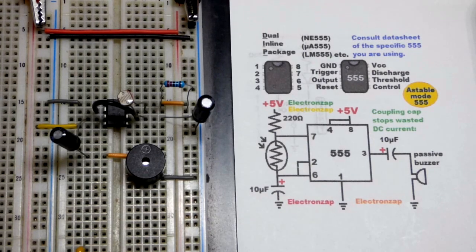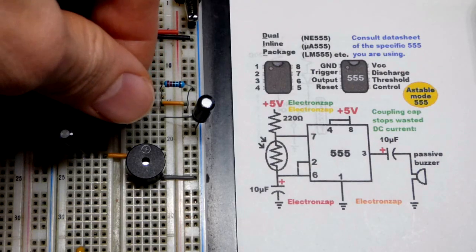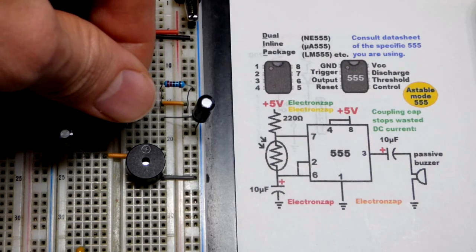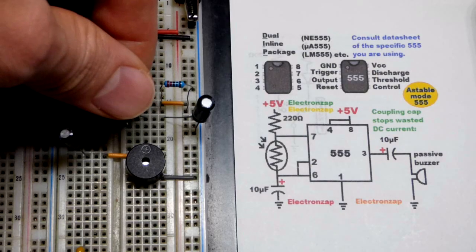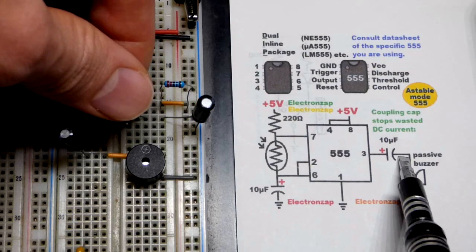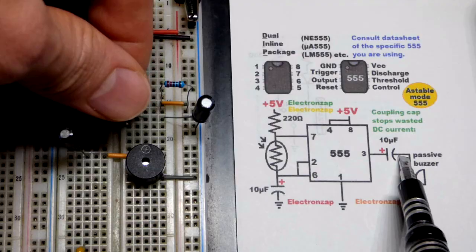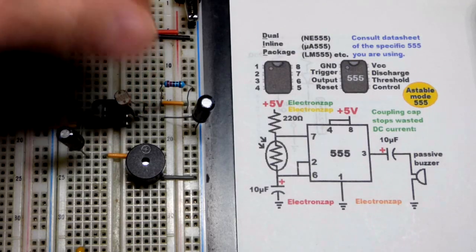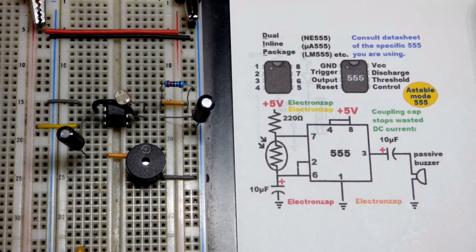So now in this video we have a 555 timer that's making a passive buzzer click. The passive buzzer clicks when the voltage changes from either high to low. We have a capacitor to limit how long the capacitor can pass current right there, because otherwise it's going to waste current.